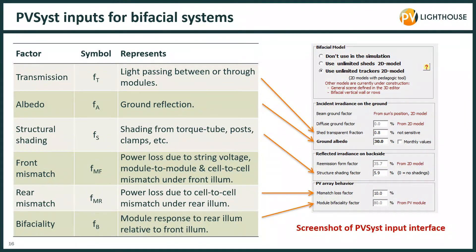Many of you will be familiar with using PVSYST to simulate bifacial systems and will recognise the screenshot on the right showing the principal bifacial inputs required. They include the transmission factor, the albedo, structural shading from things like torque tubes, posts and clamps, and the mismatch for the rear. There's also a mismatch value for the front, but that's dominated by module-to-module mismatch, so in this work we combine the two into a single mismatch value. And then there's the bifaciality of the modules.